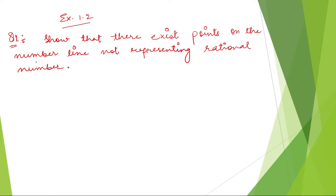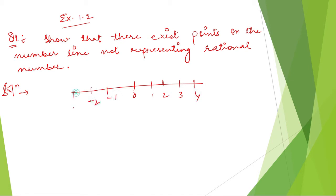So how to do this question — first let us discuss. You are going to draw a line and mark the points 1, 2, 3, 4 and minus 1, minus 2, minus 3. The question is asking us whether we can point any non-rational number, that is an irrational number, on this number line. We need to prove that we can represent a number which is not a rational number on this line. So for that, just take any number — let me take this one.